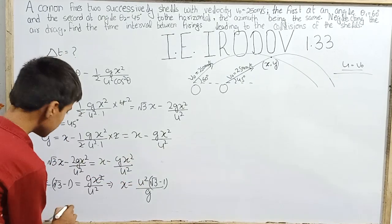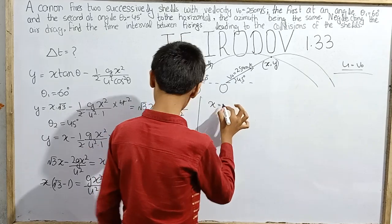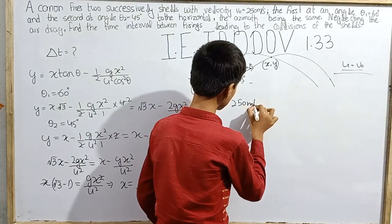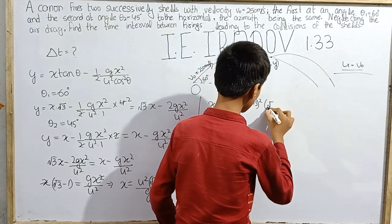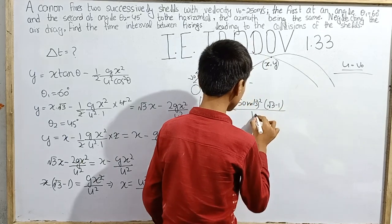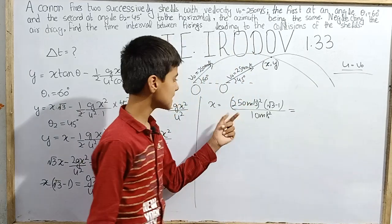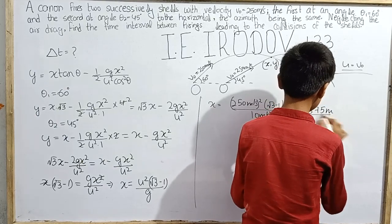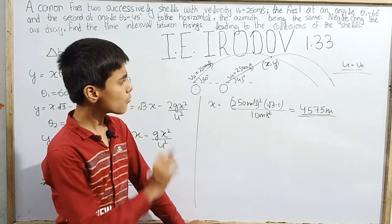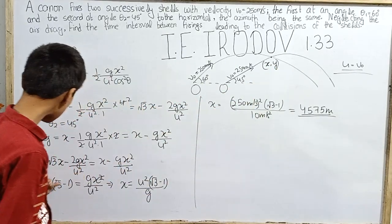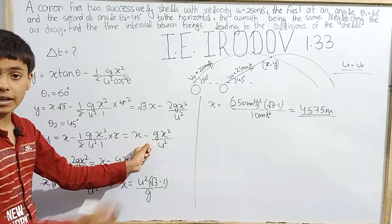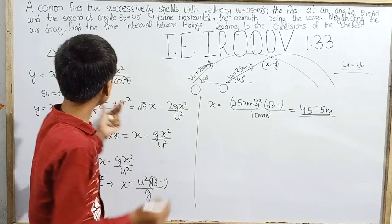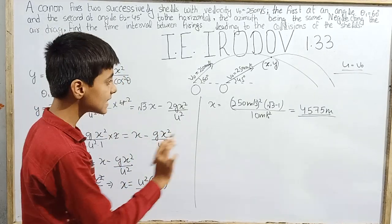Now solving: x equals u squared, where u is 250 meter per second, so 250 squared times (root 3 minus 1) over g value which is nearly 10 meter per second squared. While solving this equation, we get 4575 meters. This is the value of x. We don't need the value of y, we just need to solve for the time interval delta T.